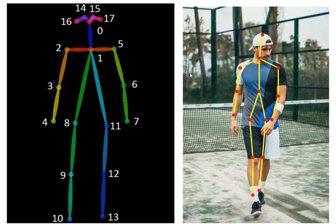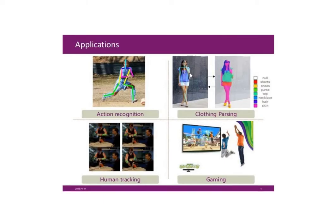There are some applications — different types of medical applications are there. You can check if there are any abnormalities in human pose, so doctors can use this. You can also do action recognition so that robots can learn what type of directions we are giving to them. These we can track using human pose estimation.